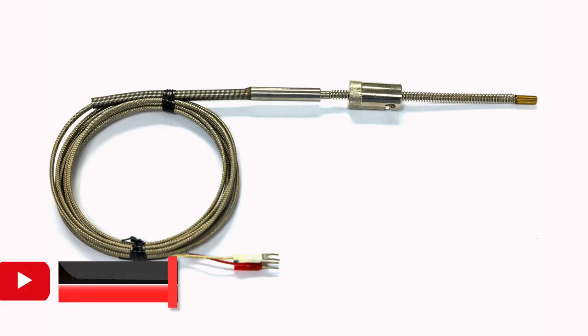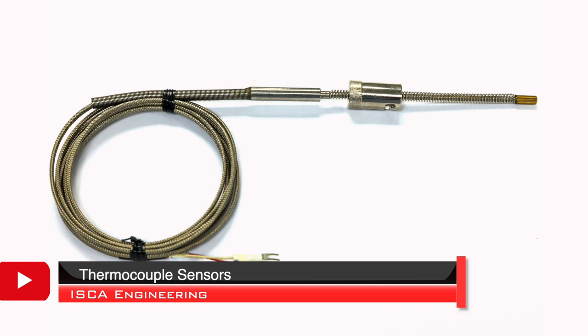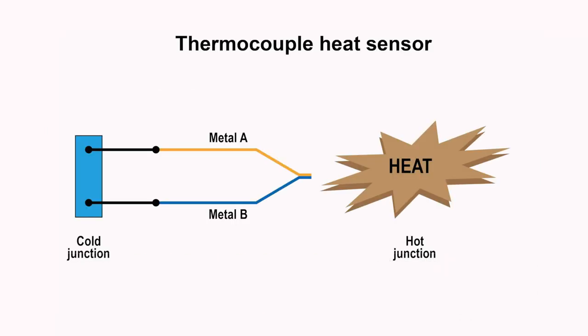The thermocouple is a sensor that measures temperature. It consists of two dissimilar metal wires joined at one end and connected to a thermocouple thermometer or other thermocouple-capable device at the other end. When the two dissimilar metals are joined, a DC voltage will be generated that relates to the difference in temperature between the hot and cold junction.